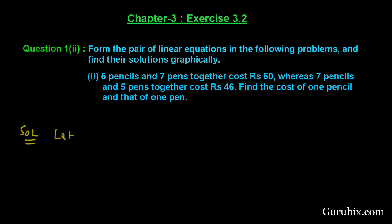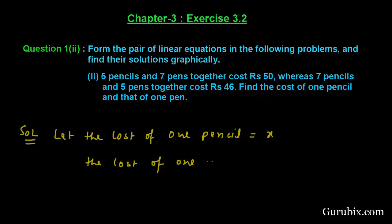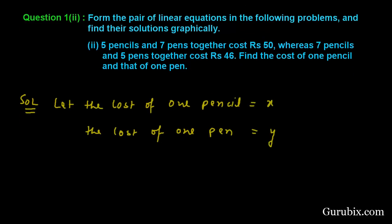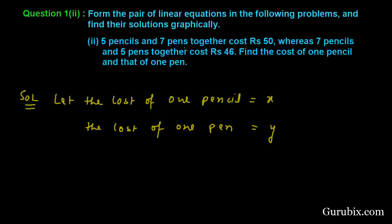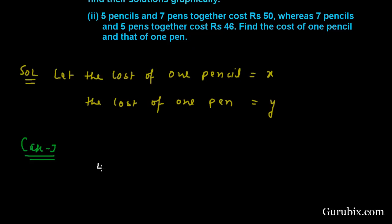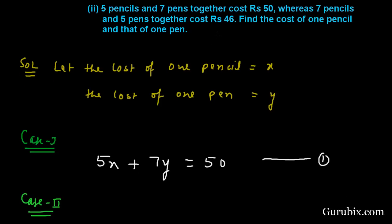First, we let the cost of 1 pencil be equal to x and the cost of 1 pen be equal to y. Now we shall use the information given in the problem. In case 1, we are told that 5 pencils and 7 pens together cost Rs. 50. This means 5x plus 7y is equal to 50.